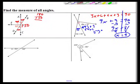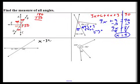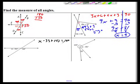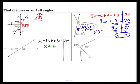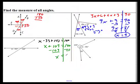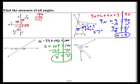Linear pair algebra: angles (x − 33) and 142 form a linear pair, so they're supplementary. Set up: (x − 33) + 142 = 180. Combine like terms: x + 109 = 180. Subtract 109 from both sides: x = 71. So the missing angle is 71 − 33 = 38 degrees, and 38 + 142 = 180. Confirmed.